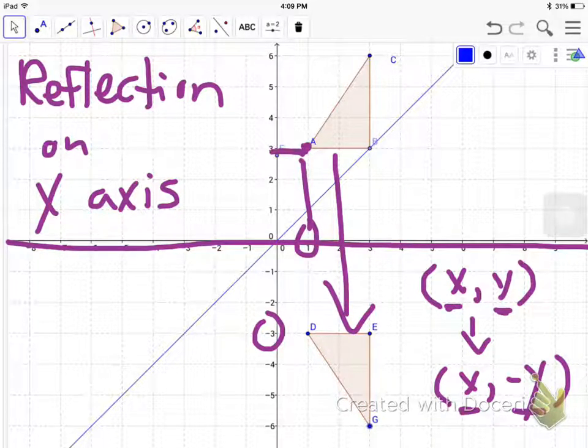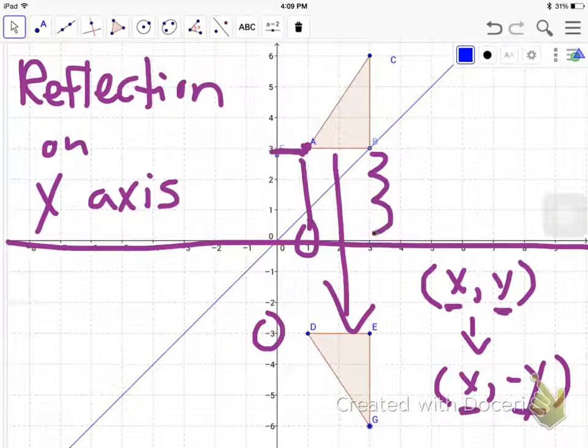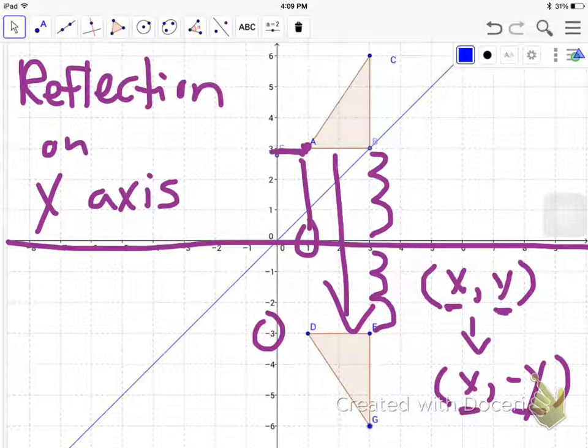Another way you can do this is you can count how many spots it is away from the x-axis. So let's look at this one right here. We're going to go 1, 2, that's 3 away from the x-axis. Then we can go down and count 3 on the other side: 1, 2, 3. And that's where our reflected point goes.